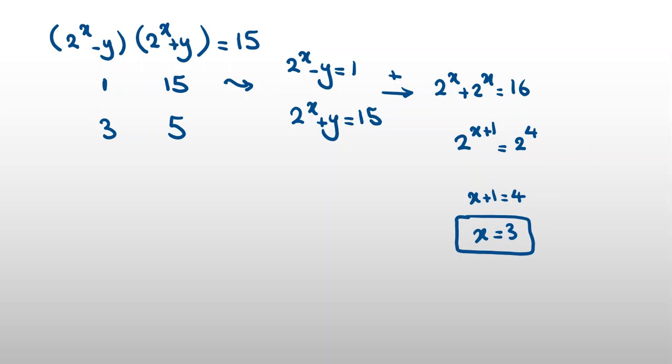Now, if we replace x = 3 here, 2^3 = 8, plus y = 15, and we conclude y is 7 here.